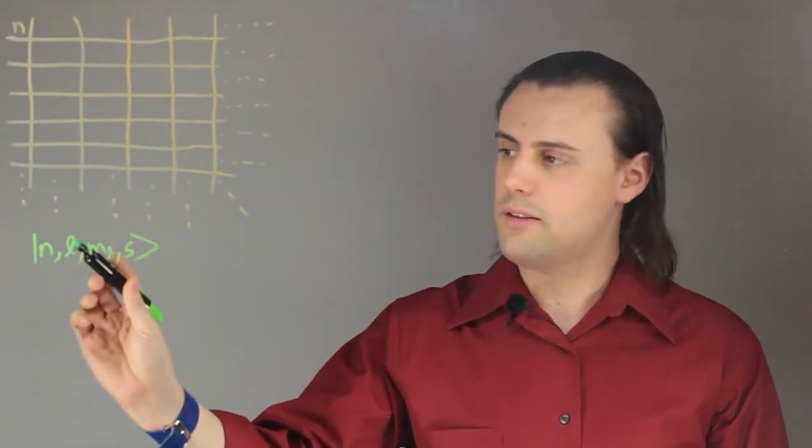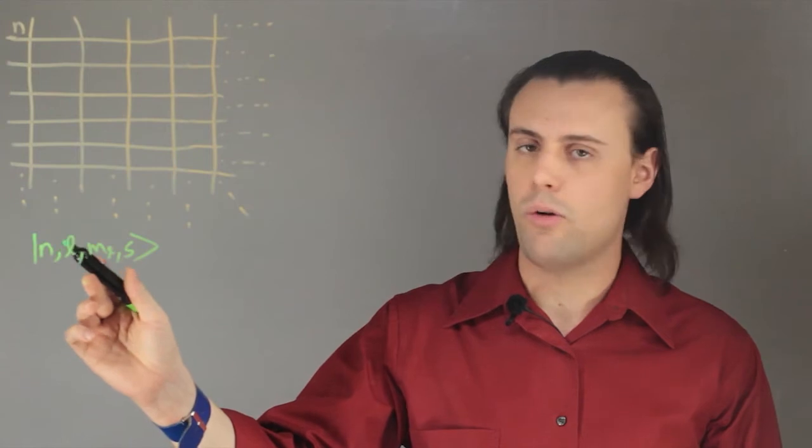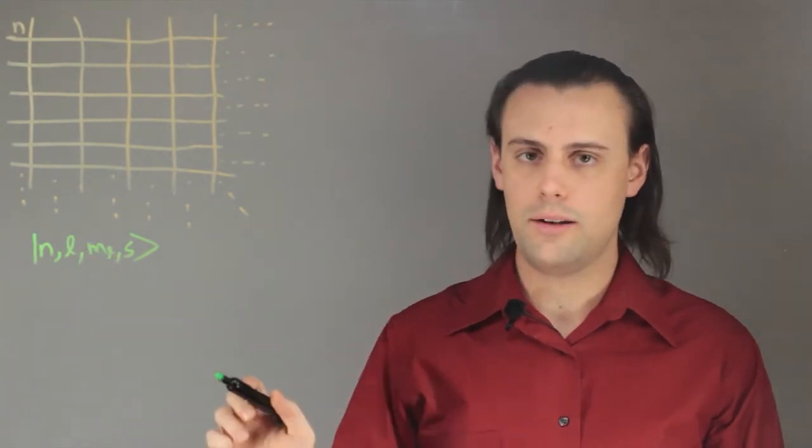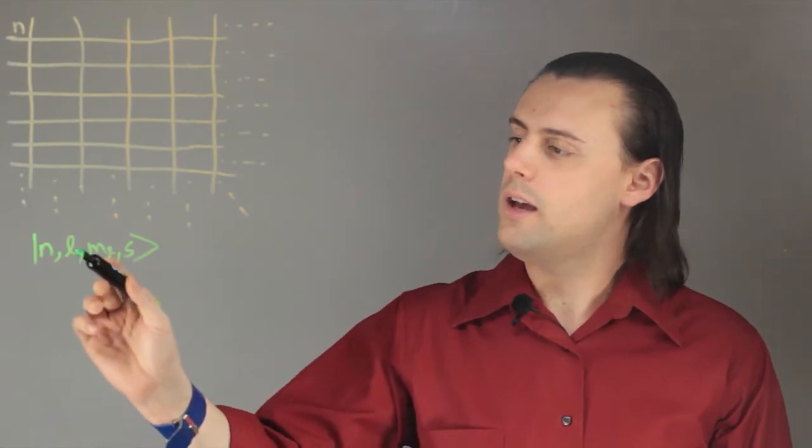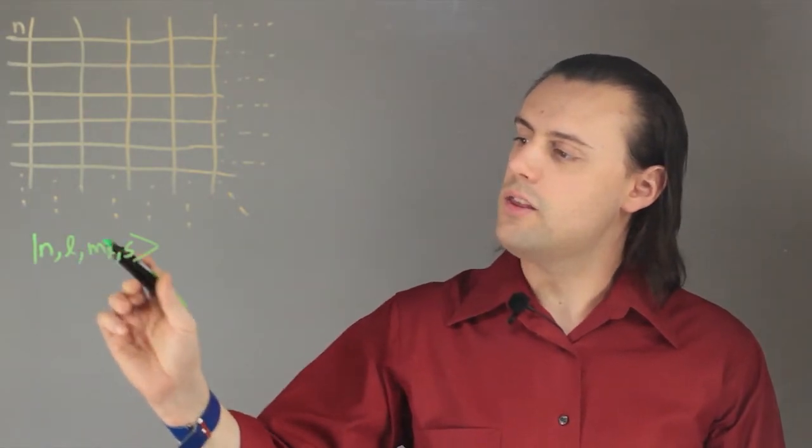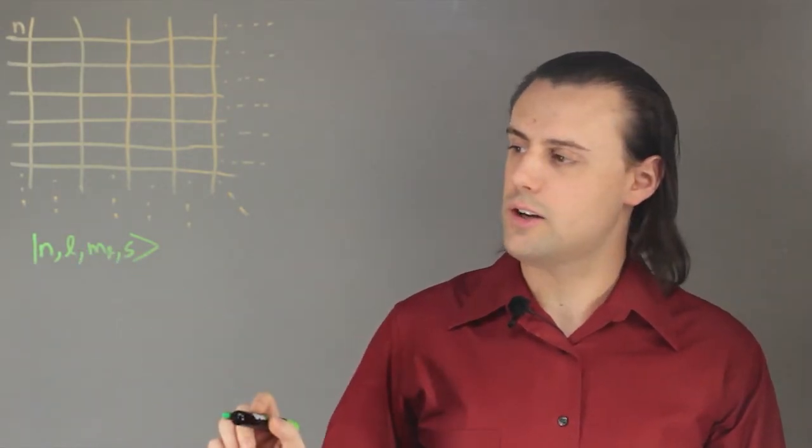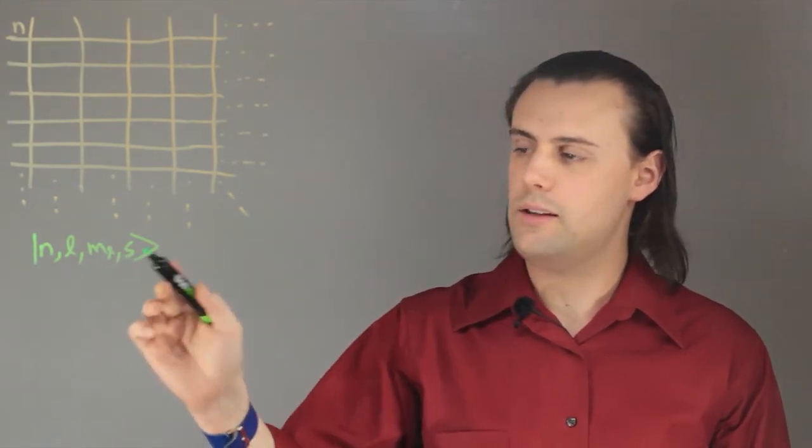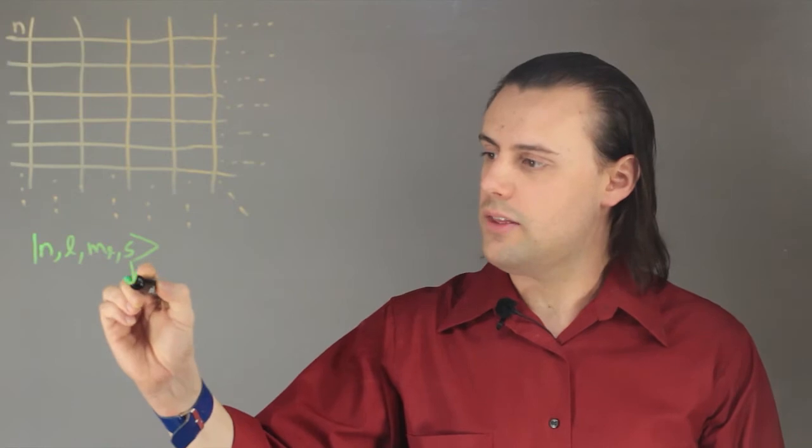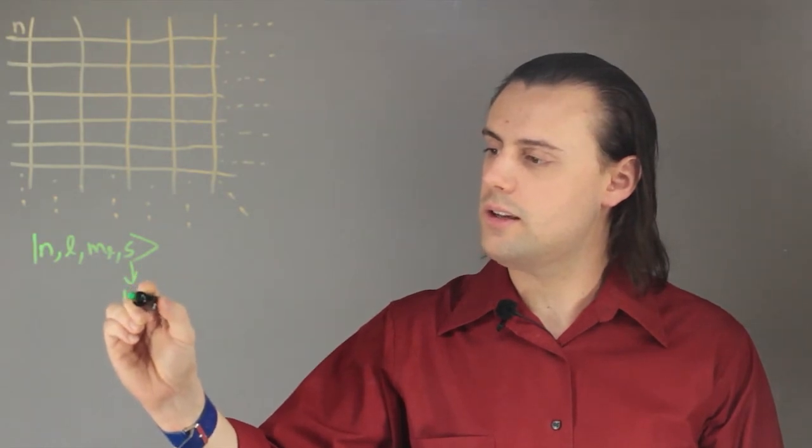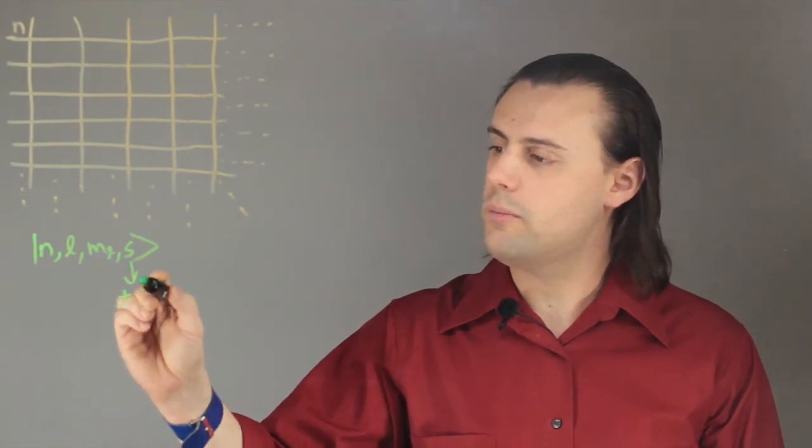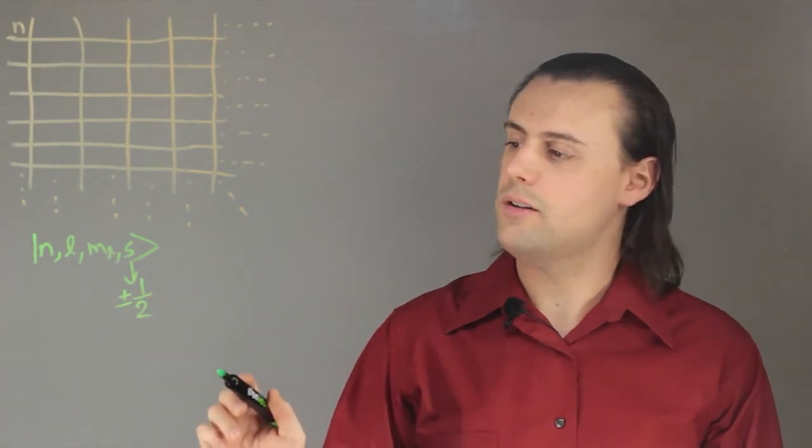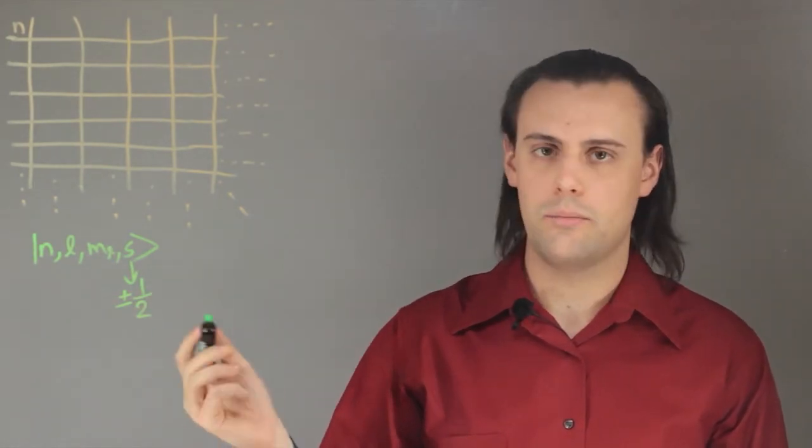So n is the principal energy quantum number of the electron. l is the angular momentum quantum number and it represents the orbital that you can find an electron in. m sub l is the magnetic quantum number and s is the spin. The spin of the electron can take on either plus or minus one half with units of angular momentum characterized by Planck's constant.